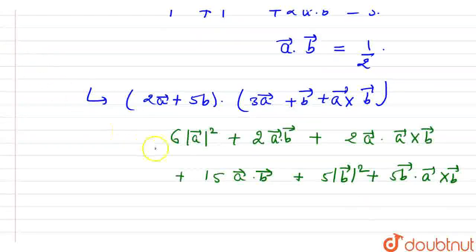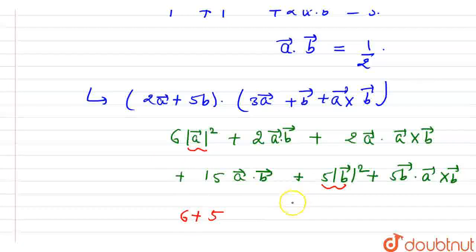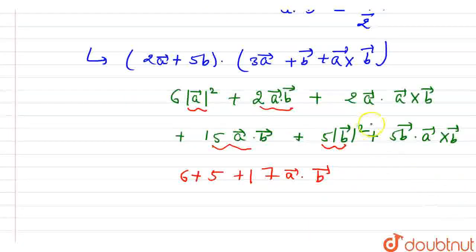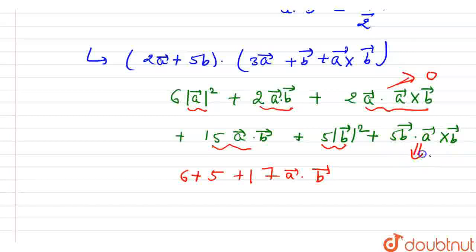If we further solve this: since A and V are unit vectors, modulus squared equals 1, so 6 times 1 gives 6, and 5 times 1 gives 5. The 15 AB and 2 AB terms combine to give 17 times A vector dot V vector, since dot product is commutative. For the scalar triple product terms, if any two of the three vectors are the same, the scalar triple product is zero — so both those terms vanish.